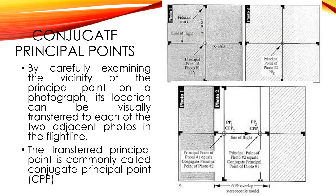Conjugate Principal Point: by carefully examining the vicinity of the principal point on a photograph, its location can be visually transferred to each of the two adjacent photos in the flight line. The transferred principal point is commonly called the conjugate principal point.